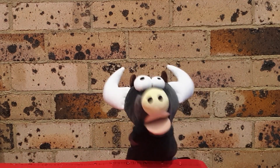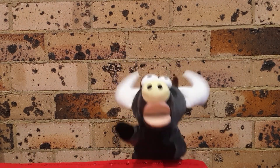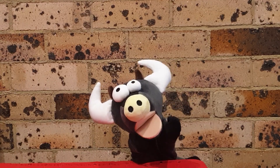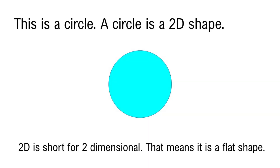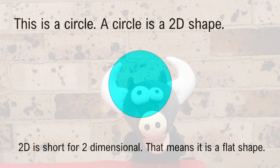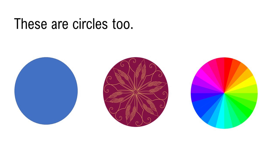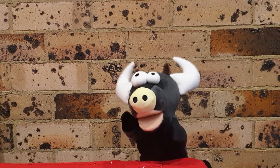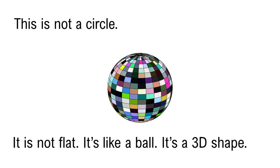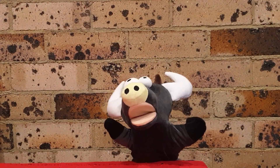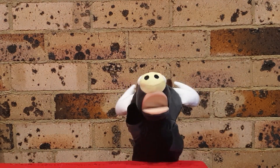This is a circle. A circle is a 2D shape. 2D is short for two-dimensional — that means it's flat. These are also circles. This is not a circle. It is not flat. It is like a ball. This is a 3D shape, or three-dimensional.